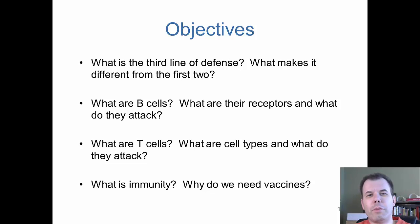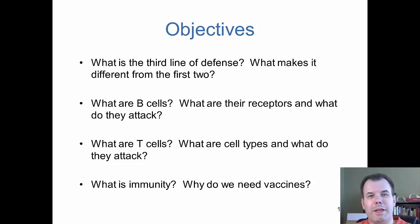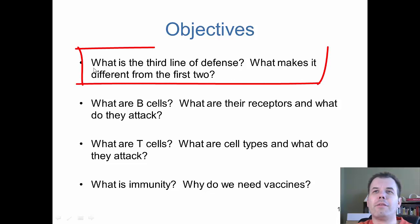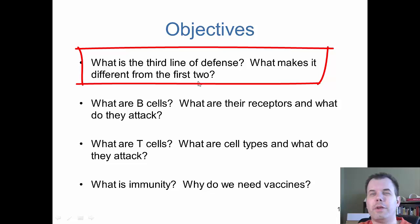Two things to remember: specificity and memory — those make acquired or adaptive immunity so important. Let's look at the third line of defense.